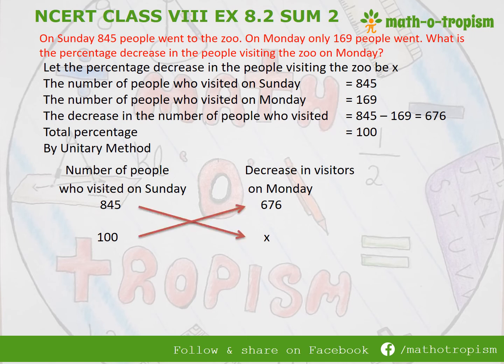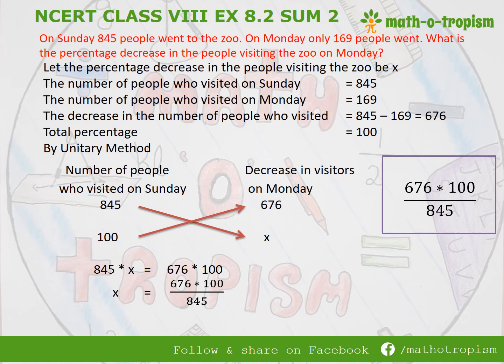If 100 people had visited, what is the decrease in percentage, which is x? By unitary method we do cross multiplication, so it becomes 845 times x equals 676 times 100. Keeping x on the left hand side and bringing 845 to the right hand side it goes to division, so x equals 676 times 100 divided by 845. Now we will try to simplify this.